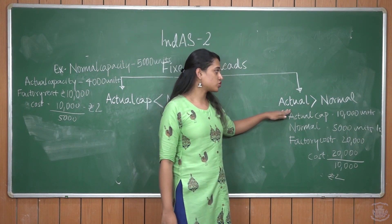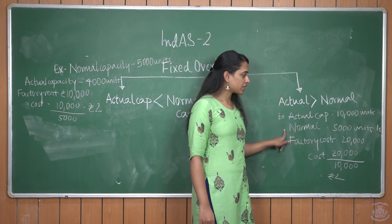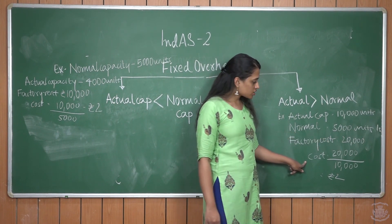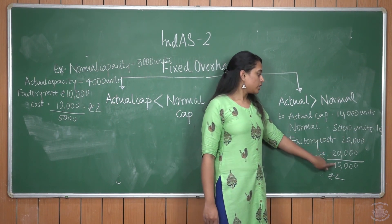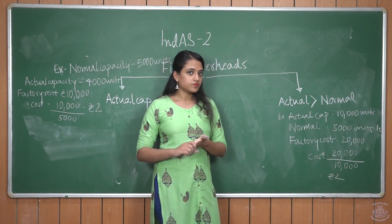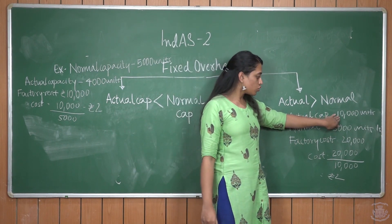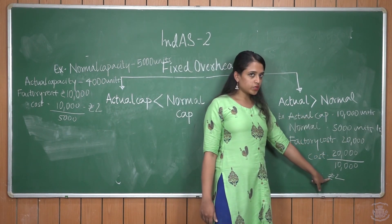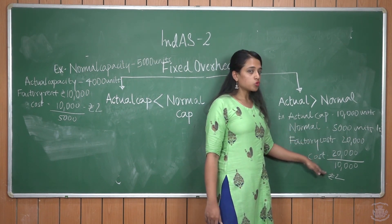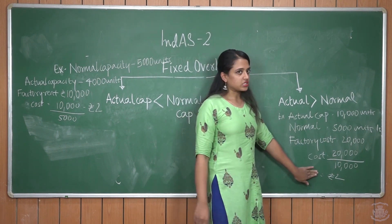In the second case, actual capacity is greater than normal capacity. For example, actual capacity is 10,000 units, normal capacity is 5,000 units, and factory cost (fixed overhead) is Rs. 20,000. The cost absorbed here is Rs. 20,000 divided by 10,000 (actual capacity), giving Rs. 2 per unit. Actual capacity is used here because production was efficient. If normal capacity of 5,000 had been used, the cost would have been Rs. 4 per unit. Since actual capacity gives a reduction in cost, actual capacity is considered.